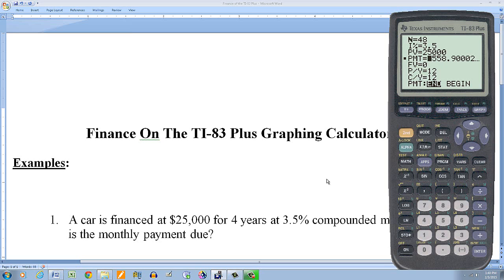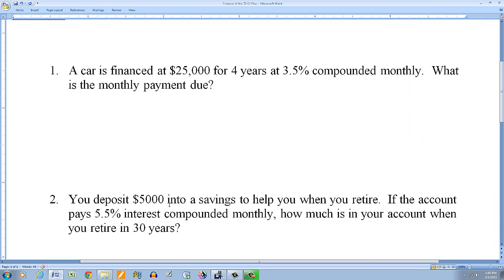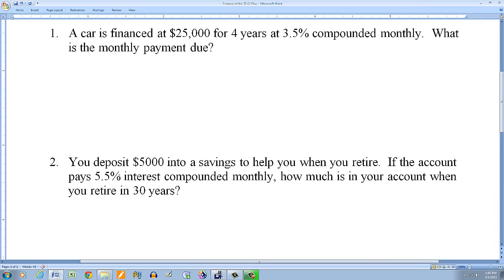Okay. Let's go to the next one. This one says, you deposit $5,000 into a savings to help you when you retire. So that means you're going to deposit the $5,000, you're going to let it sit there. If the account pays 5.5% interest compounded monthly, how much is in your account when you retire, say in 30 years? So you're just going to deposit. You're not going to make any further deposits or withdrawals. It might just sit there for 30 years and it's asking how much are you going to have?